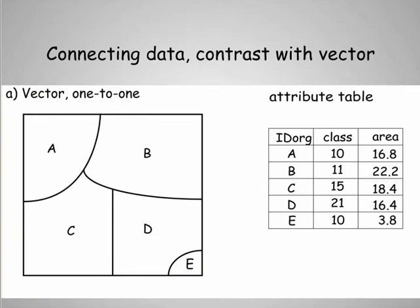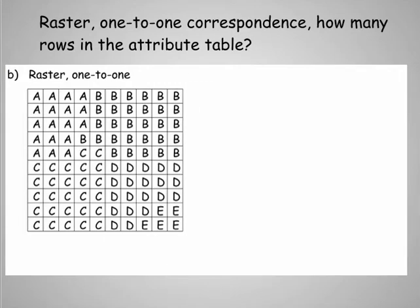Now in a raster system, we typically don't have this one-to-one relationship between our attribute table and our polygonal or aerial or line features. In vectors, we do have this one-to-one relationship. So there's an entry in a table, a row in a table, associated with each of the features: five polygons and five rows. In rasters, we typically don't do this because basically there are too many cells.